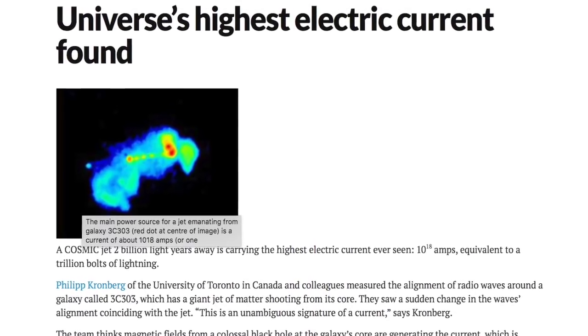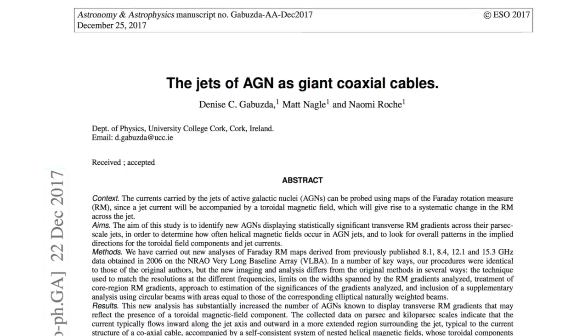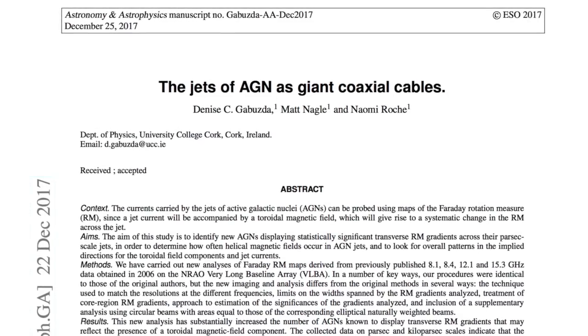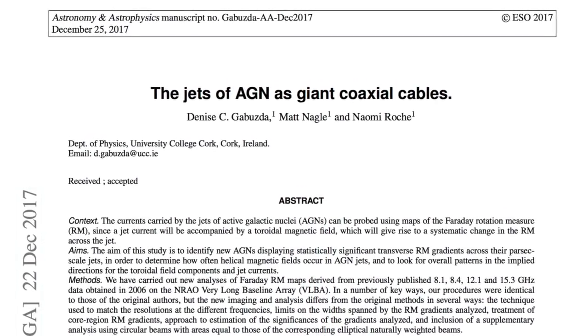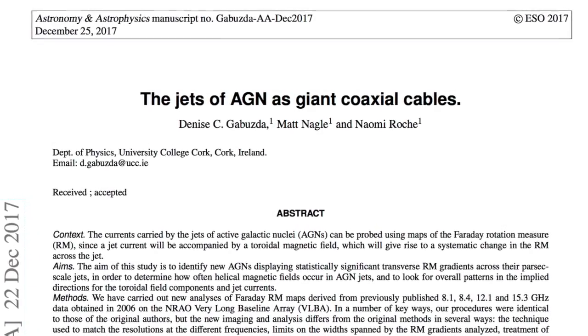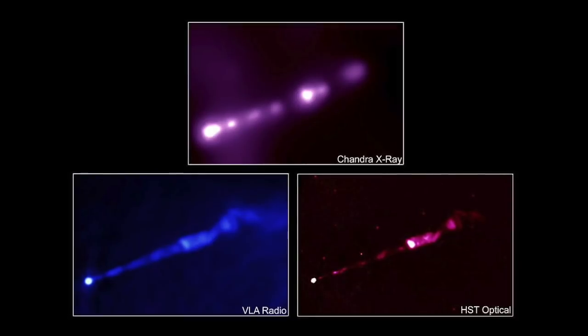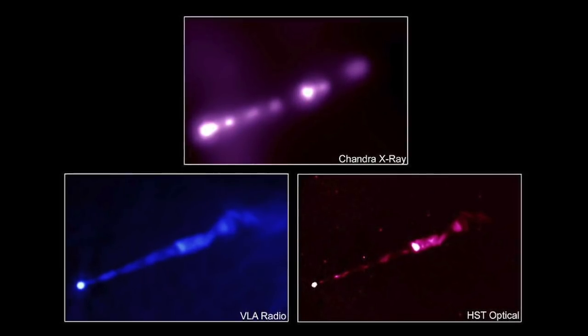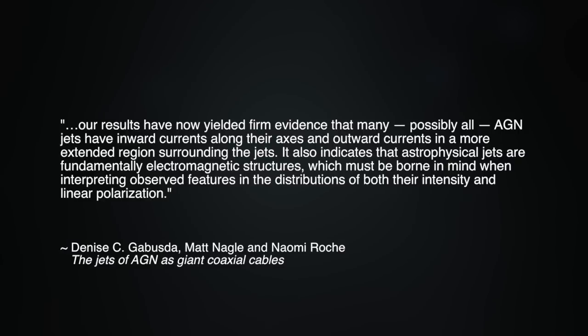However, we do see increasing signs that this inevitable recognition is beginning to occur. The December 25, 2017 issue of Astronomy and Astrophysics published the paper, The Jets of Active Galactic Nuclei as Giant Coaxial Cables. In looking at the properties of stupendous parsec-scale jets, the authors conclude that our results have now yielded firm evidence that many, possibly all, active galactic nuclei jets have inward currents along their axes and outward currents in a more extended region surrounding the jets.